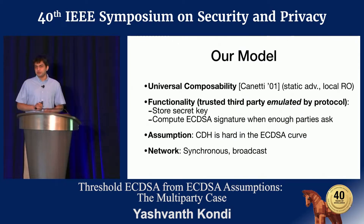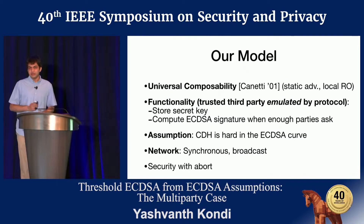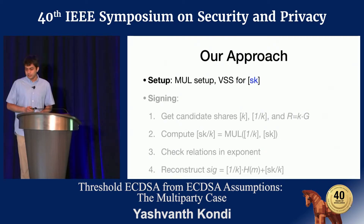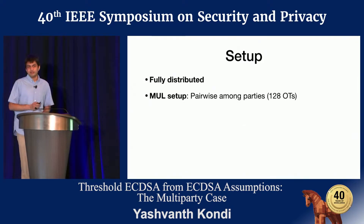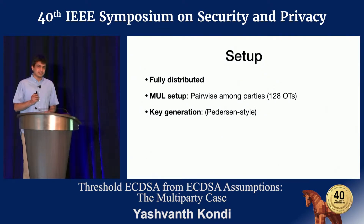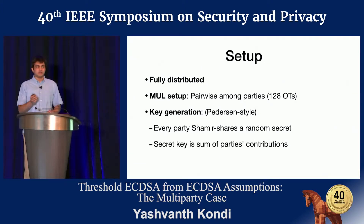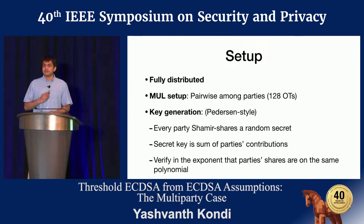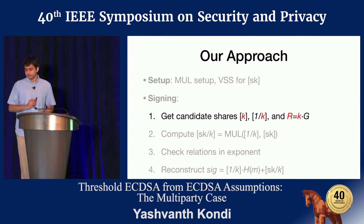The network assumptions we use are a synchronous network and access to a broadcast channel, and we achieve security with abort. Walking through our approach: the setup is fully distributed and involves running OTs pairwise among parties to establish base OTs for OT extension. Our key generation is done in the style of Pedersen — every party shares a random secret, and the secret key is defined as the sum of each party's contribution. Ultimately, every party verifies they have a share on the same polynomial by checking in the exponent — interpolating in the exponent.